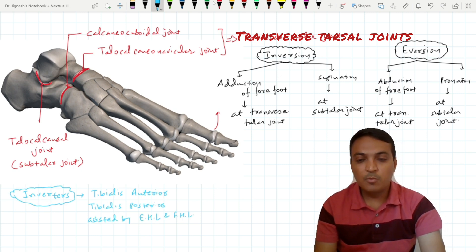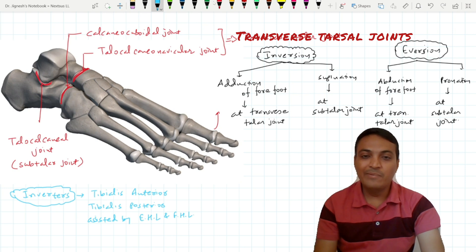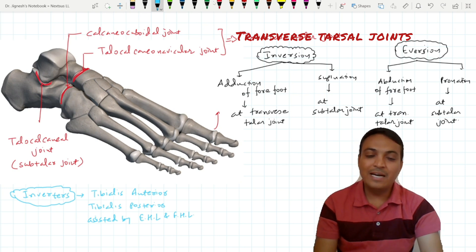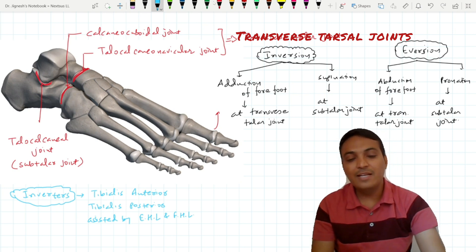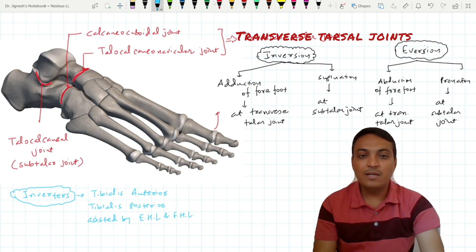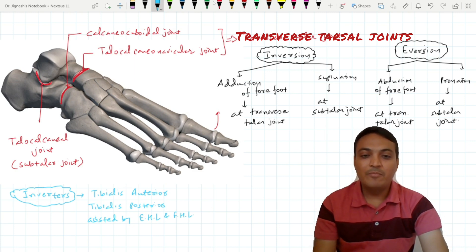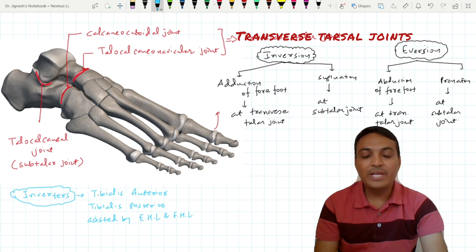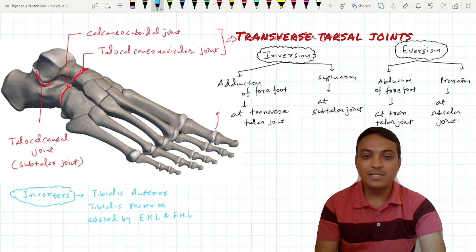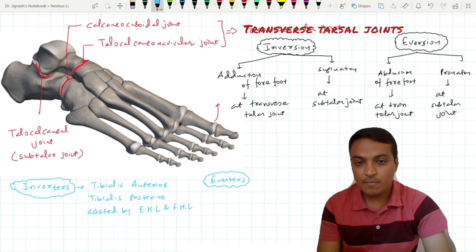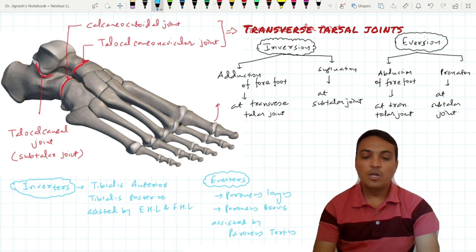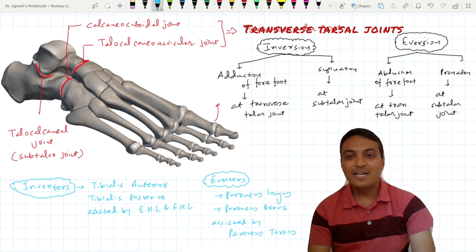The muscles producing eversion are those attached on or passing from the lateral aspect of the foot. Mainly these are peroneus brevis and peroneus longus, assisted by peroneus tertius. So this is all about the inversion and eversion.